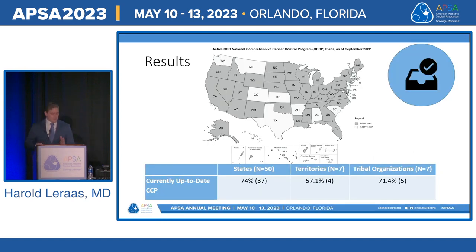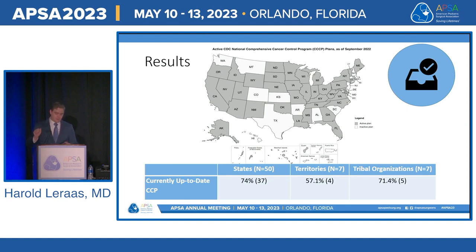I'll show a series of maps representing each group's cancer control plans. States in dark gray meet the criteria for the variables we assessed. First, we assessed which states had up-to-date cancer control plans — meaning they had submitted or revised their plan within the last five years. As you can see, 74% of states had up-to-date cancer control plans.